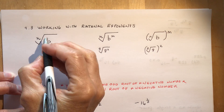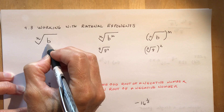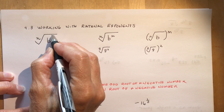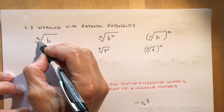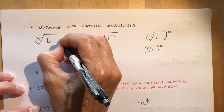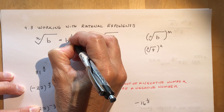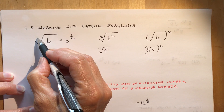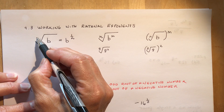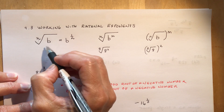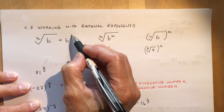We've already talked about this notation: the index number, the radicand, and the radical sign. Whatever number is in front is the denominator of a fraction. So the nth root of b equals b to the 1 over n. Normally when there's no number shown, that magic number is 2 — so taking the square root is the same as raising to the half power.